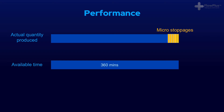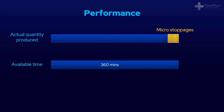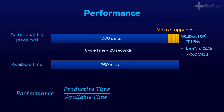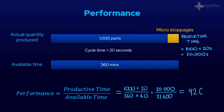The best way to calculate performance is to compare the outputs: how many products were produced compared to the available run time? For example, if 1,000 parts were produced and the cycle time of the machine is 20 seconds, then there was a total of 20,000 seconds of productive time. By dividing this by the available time in the same units, all slowdowns are taken into account. The available time is 360 minutes × 60 = 21,600 seconds, and productive time was 20,000 seconds. So 20,000 divided by 21,600 equals 0.926 or 92.6% — that is the performance rate.